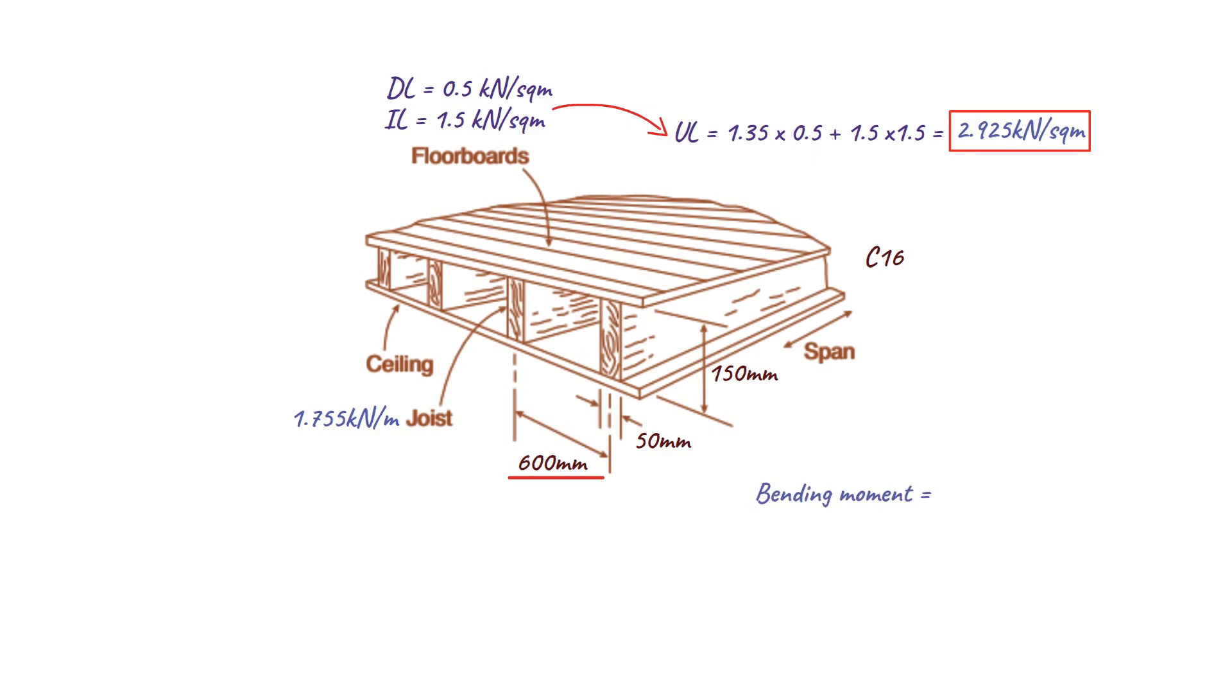we can multiply the load W by the length of the floor joist L squared and divide the result by 8. In this case, the bending moment is 1.755 times L squared divided by 8.